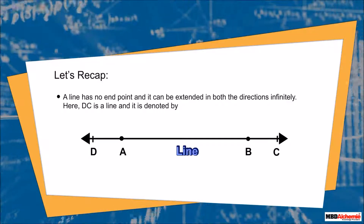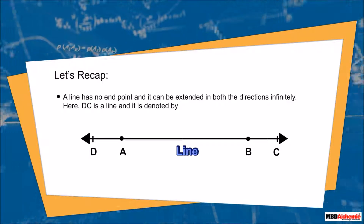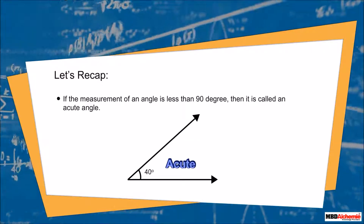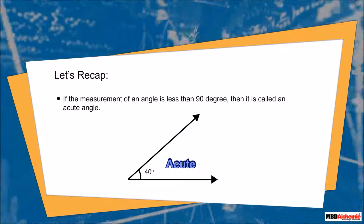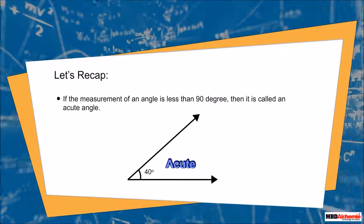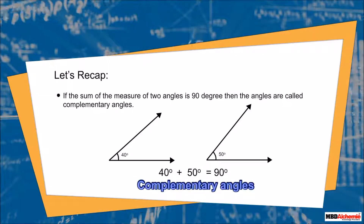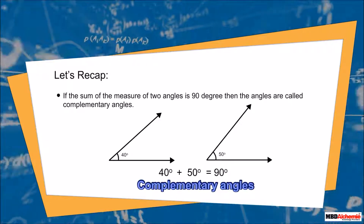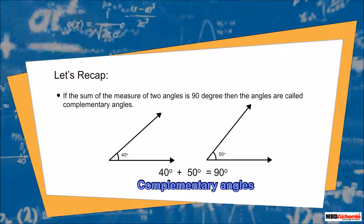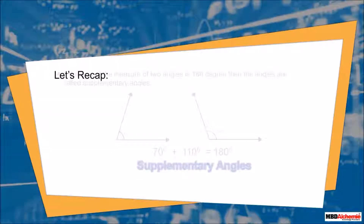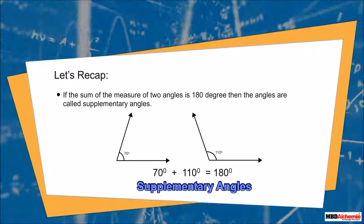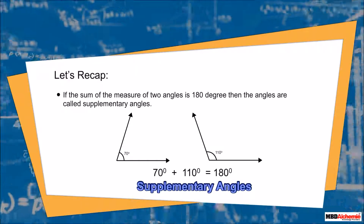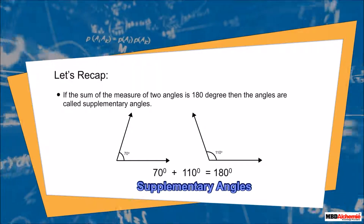A line has no endpoint and can be extended in both directions infinitely. DC is a line, denoted by a line with a double arrowhead over the top of the letters. If the measurement of an angle is less than 90 degrees, it is called an acute angle. If the sum of two angles is 90 degrees, they are complementary angles. If the sum is 180 degrees, they are supplementary angles.